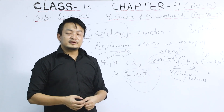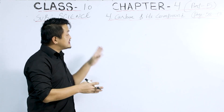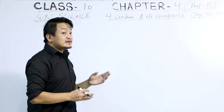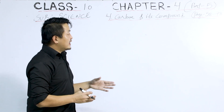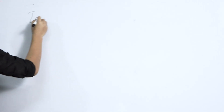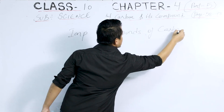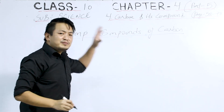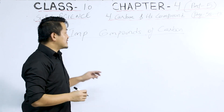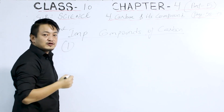The next important topic is the important compounds of carbon. In this chapter we have studied hydrocarbons, the versatile nature of carbon, and chemical properties. Now, in this last part, we study the important compounds of carbon. As mentioned in the textbook, two compounds are highlighted: ethanol and ethanoic acid. First, let's study ethanol.